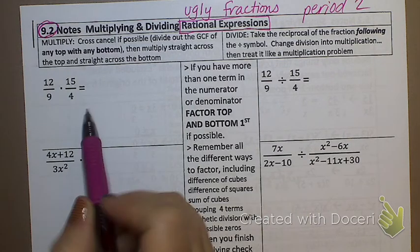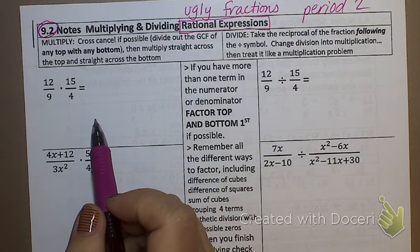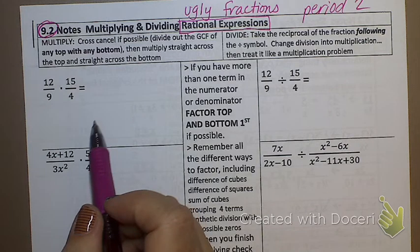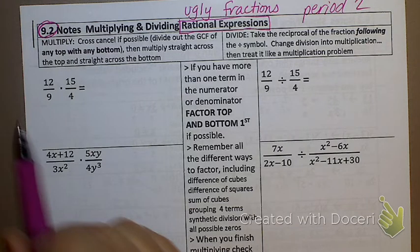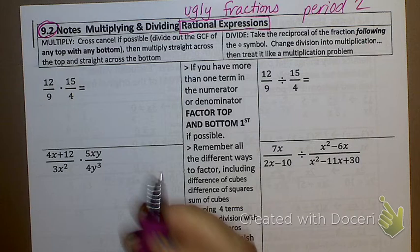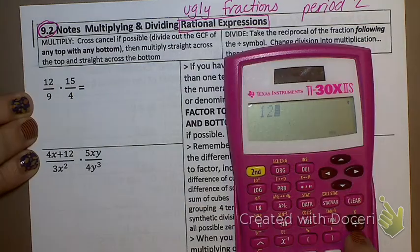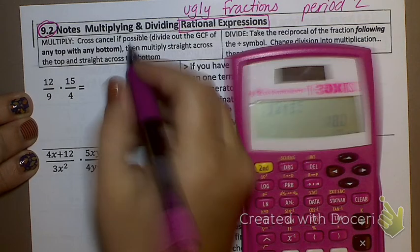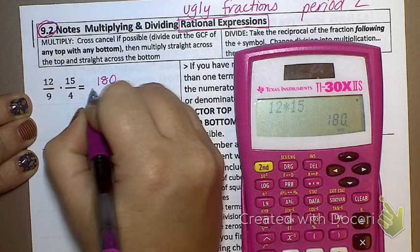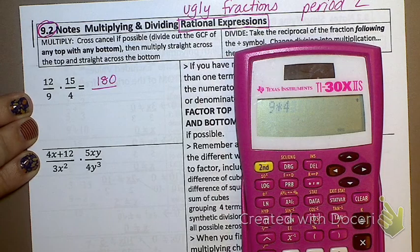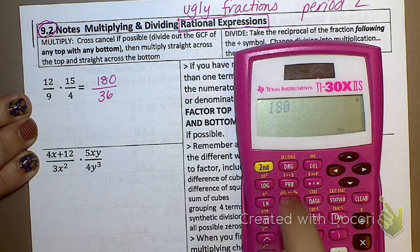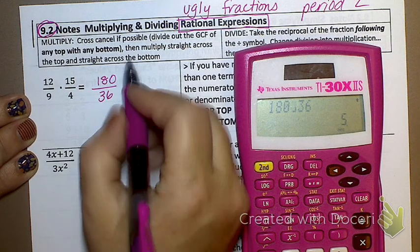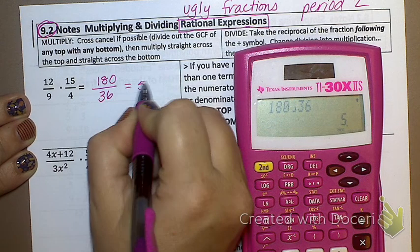Now, we have a few tricks that you can do prior to that if you want to. If I didn't want to use any of the tricks and I just wanted to multiply straight across, I could do 12 times 15, which, sorry, I don't know that off the top of my head. 12 times 15 is 180. And then 9 times 4 is 36. And then I would do 180, fraction button, 36, and I get 5. So that's one way I could do it.